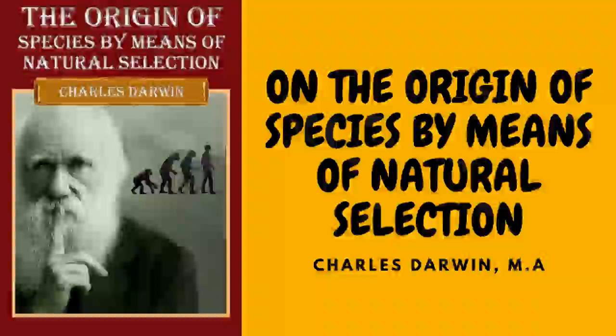To show how singular the laws are which determine the reproduction of animals under confinement: carnivorous animals, even from the tropics, breed in this country pretty freely under confinement, with the exception of the plantigrades or bear family; whereas carnivorous birds, with the rarest exceptions, hardly ever lay fertile eggs. Many exotic plants have pollen utterly worthless in the same exact condition as in the most sterile hybrids.